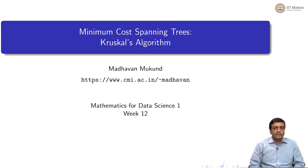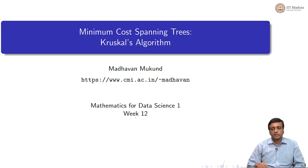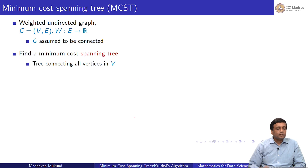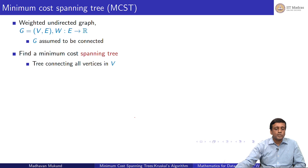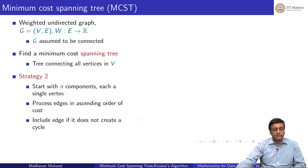We are looking at minimum cost spanning trees. We saw one strategy, the Prim strategy, which tries to incrementally grow a tree starting with one vertex until you get an overall tree which is minimum cost. The other strategy is called Kruskal's algorithm. We are working with weighted undirected graphs, with a weight function associating a number with every edge. We assume the graph is connected and we want to find the minimum cost spanning tree which connects all the vertices.